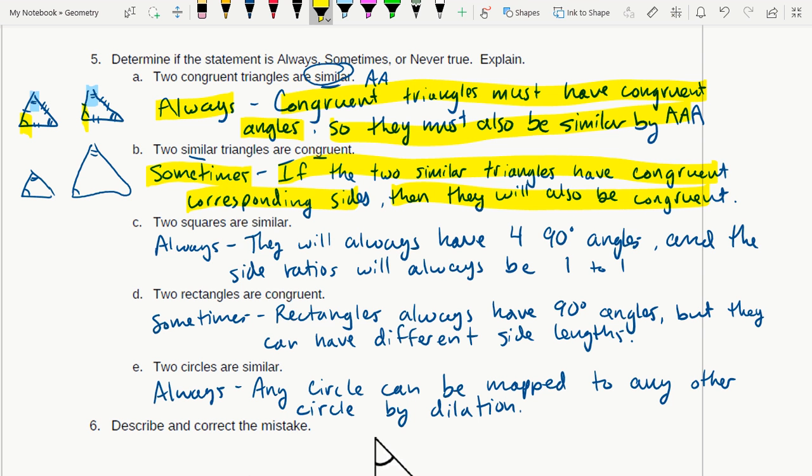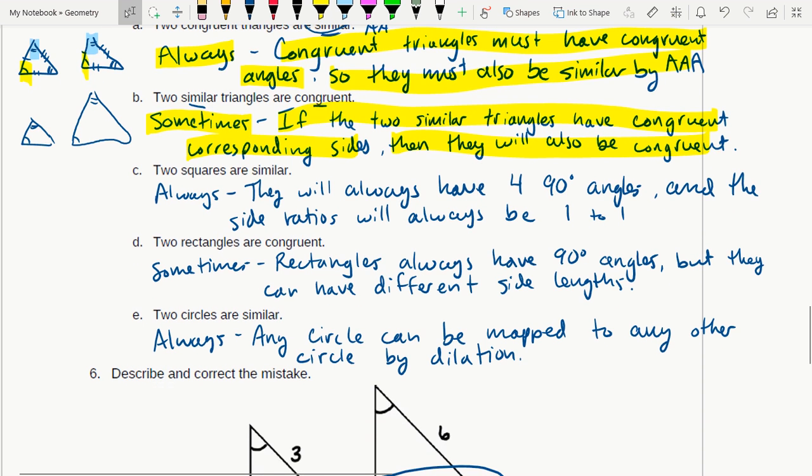If two similar triangles have congruent corresponding sides, then they will also be congruent. So there is a time when it could be congruent, but not always. Two squares are similar - remember that our rules for similarity: we have to have congruent angles and we have to have proportional sides.